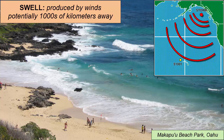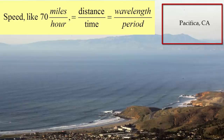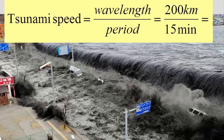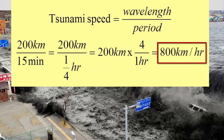To answer what happens when swell arrives at shore, we have to review a few more concepts. Speed is simply distance over time. For a wave, the distance it travels in a given unit of time is its wavelength over its period. For example, tsunami have an average wavelength of 200 kilometers and an average period of 15 minutes. When we divide those numbers, we get an average speed of 800 kilometers per hour — that's how fast the energy of a tsunami wave travels across the ocean.